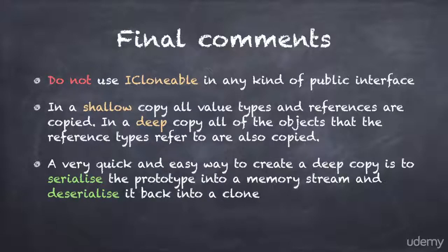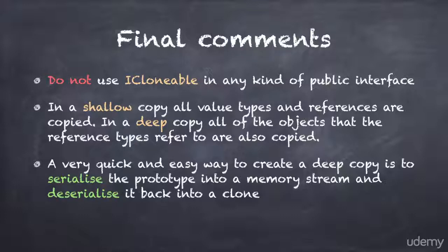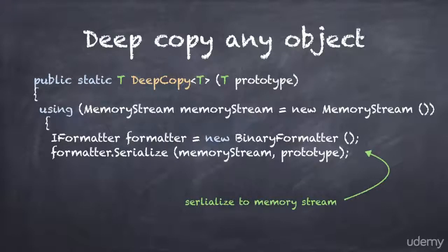It's super easy to create a shallow copy in .NET — all you need to do is call the MemberWiseClone method. But there's no standard way to create a deep copy; you have to manually clone each reference type member, just like I did in my bitmap field. But here's a tip: there's a very quick and easy way to instantly create a deep copy of any object. All you need to do is serialize the prototype into a memory stream, and then deserialize it back into a clone.